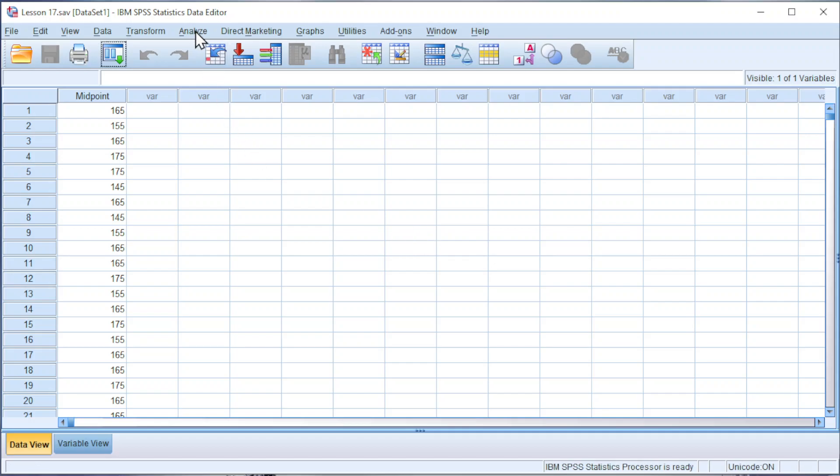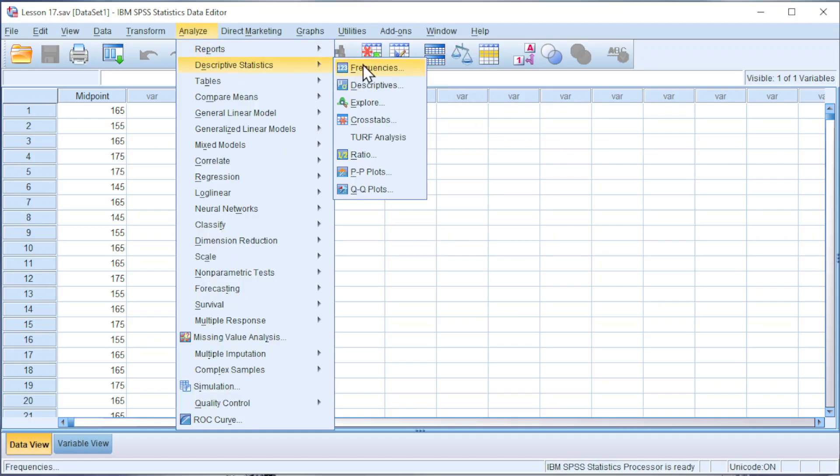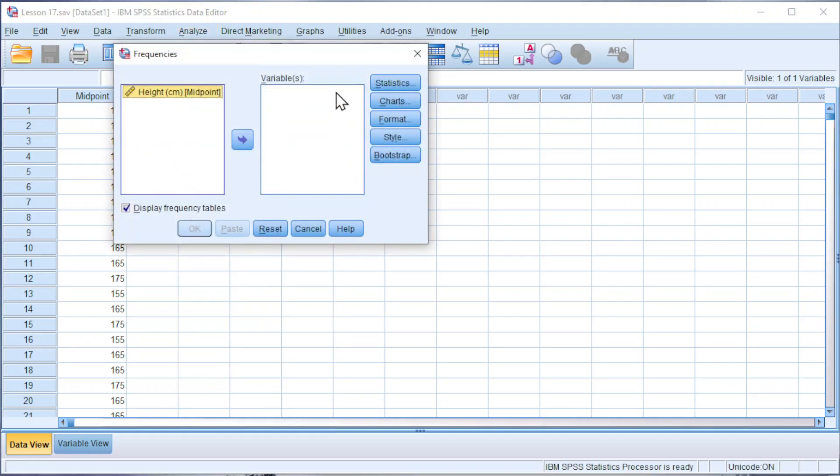First, go to Analyze. Look for discrete statistics. Click on Frequencies. Move the variable of interest to variable. Click on statistics.